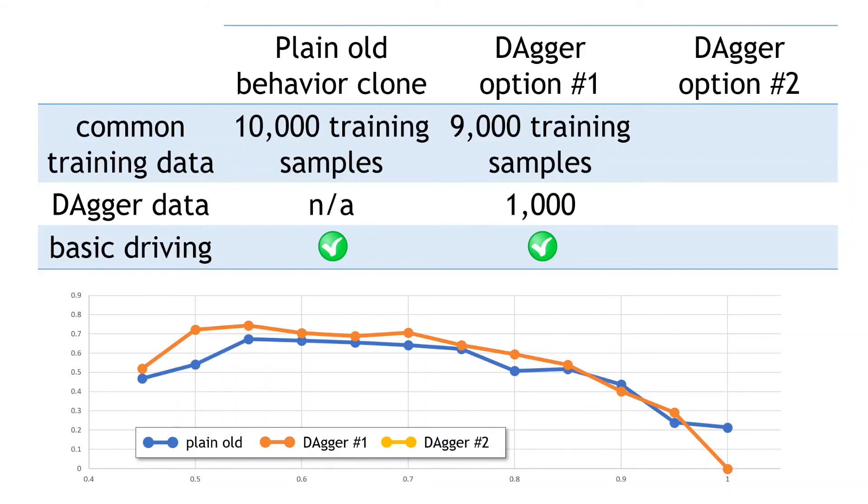And now, let's try the second Dagger option. Remember, option two let the autonomous policy do the driving, with the expert driver providing minor corrective inputs to improve the driving.